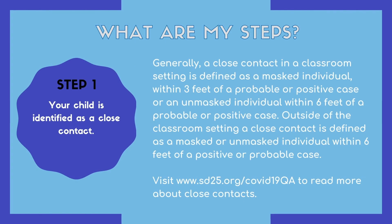Before we get into the different quarantine options, let's review the close contact process. Generally, a close contact in a classroom setting is defined as a masked individual within three feet of a probable or positive case, or an unmasked individual within six feet of a probable or positive case. Outside of the classroom setting, a close contact is defined as a masked or unmasked individual within six feet of a positive or probable case.